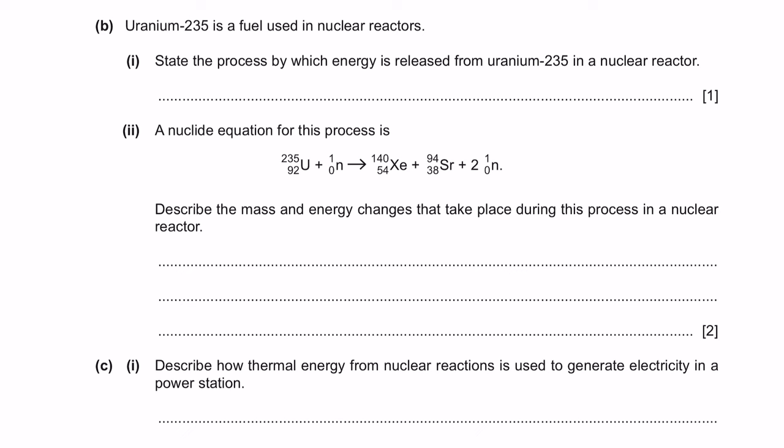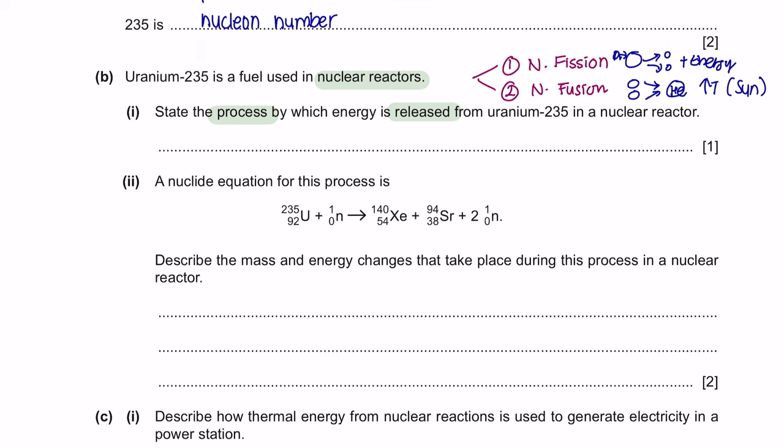Question B. Uranium-235 is a fuel used in nuclear reactors. Part 1. State the process by which energy is released from uranium-235 in a nuclear reactor. In this chapter, there are two processes that you will learn. The first one is nuclear fission and the second one is nuclear fusion. Nuclear fusion is when you have two hydrogen atoms which is combined together to form a helium atom. Since this reaction needs a very high temperature, it can only happen at sun because this temperature can only be reached in the sun. Nuclear fission is when an unstable isotope is bombarded by a neutron and it will split into two daughter nuclei. And it will produce a lot of energy. If you have seen the movie Oppenheimer, you will learn and hear a lot about nuclear fission, which is the process used to create a bomb. Anyway, the process by which the energy is released from uranium-235, which is an unstable isotope, is nuclear fission.